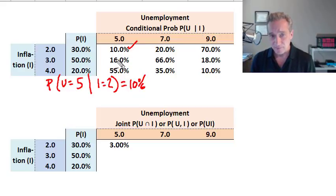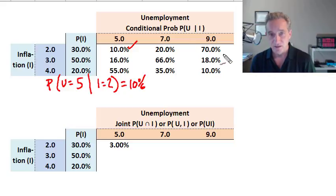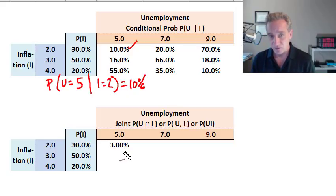Each row of conditional probabilities sums to 100%. The first row sums to 100%; the second row — 16, 66, and 18 — also sums to 100%; and the final row also sums to 100%. Now that I have the conditional probabilities, I'm going to solve for the joint probabilities, and that allows me to use all three terms.